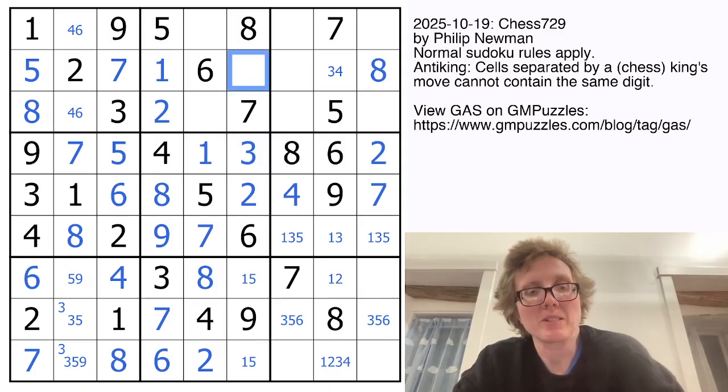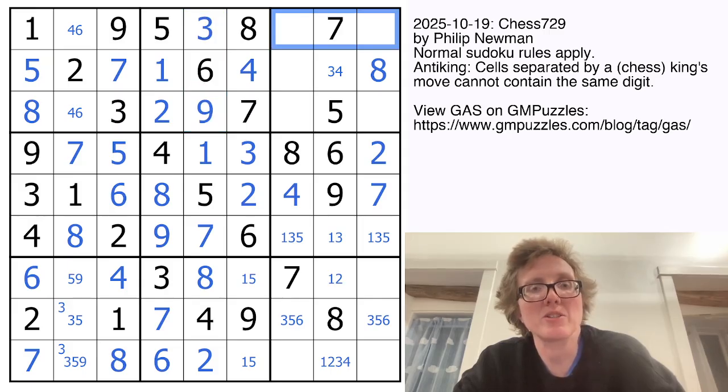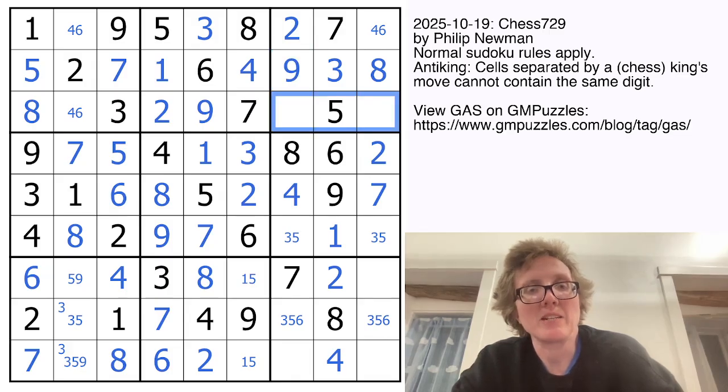And now we're going to place a 4 to finish off this column. My last two digits in this region are 3 and 9, like that. In this row I need a 2, 4, and 6. The 2 can't go there, so it must go there. The 4 resolves this 3, 4, which resolves everything else in this column. And now in this row I'm going to need to finish off with a 9. Then I need 1, 4, and 6 here. That's not a 4 because it touches a 4, and it sees a 4 there.